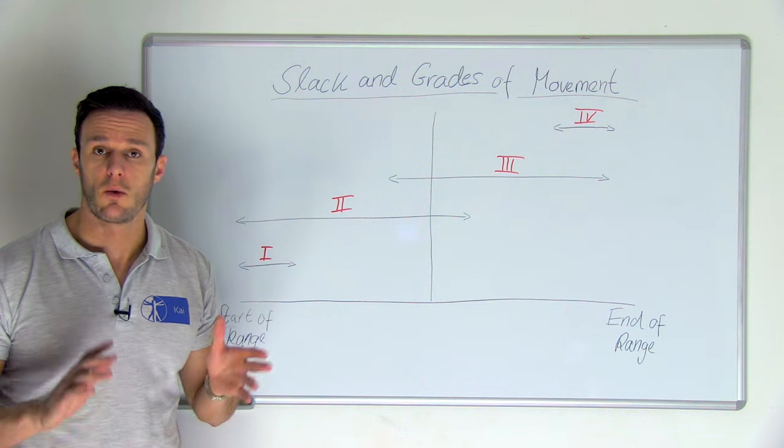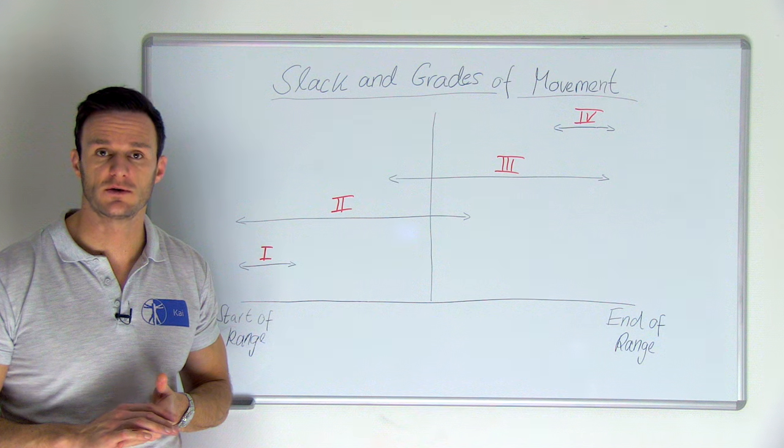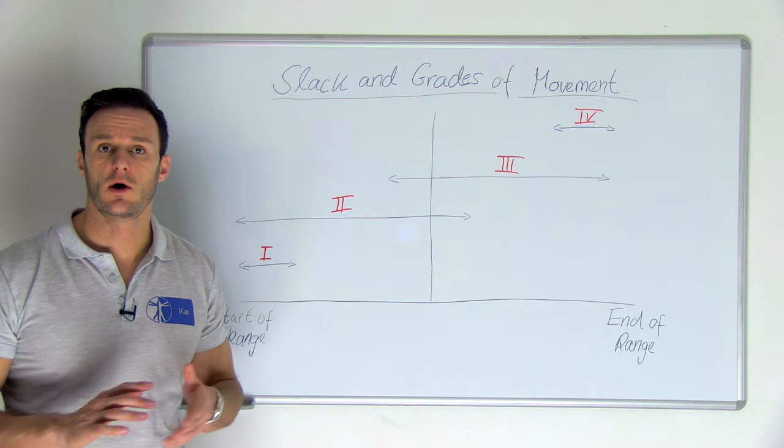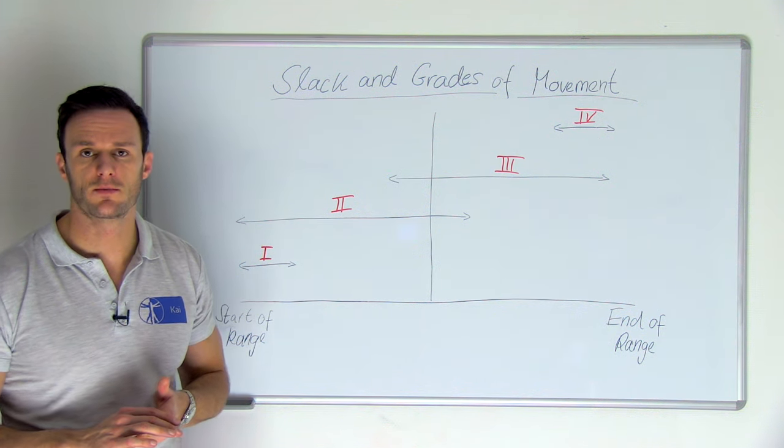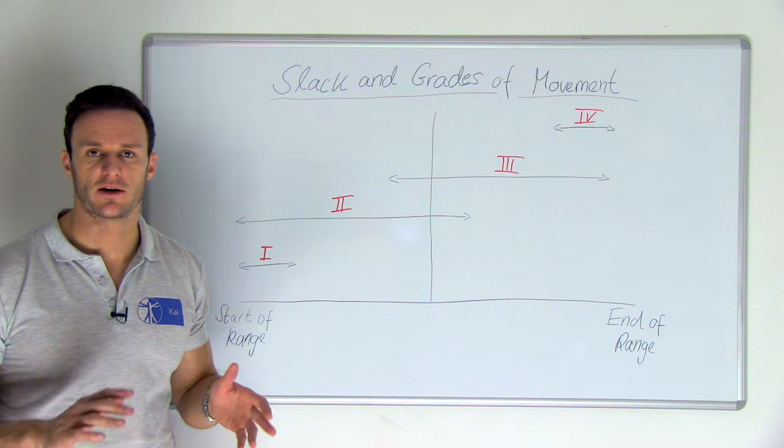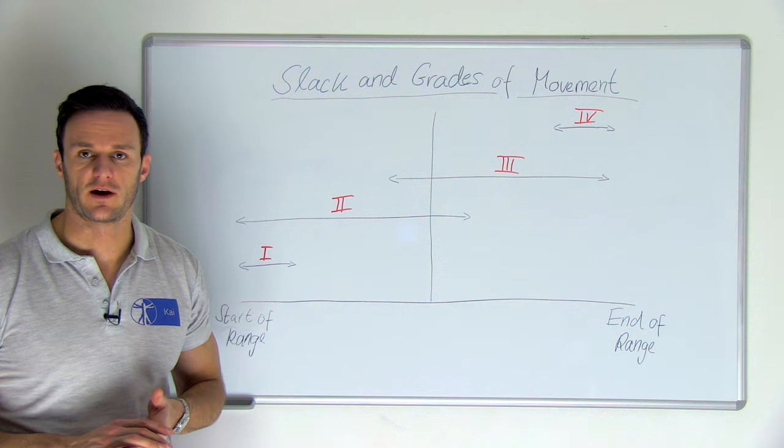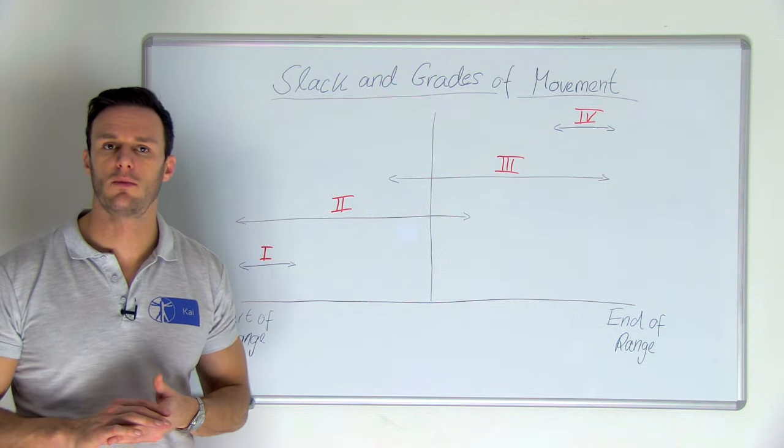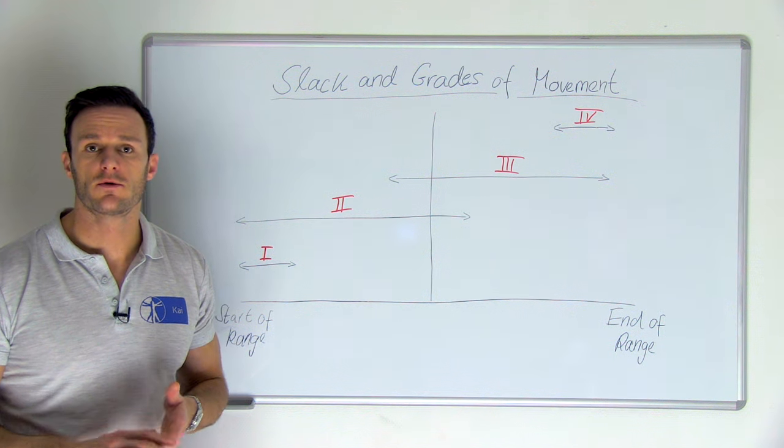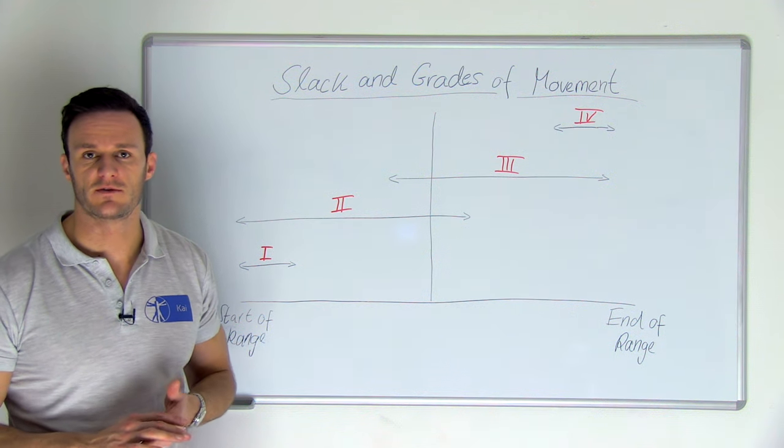Maitland describes grades 1 and 2 as techniques which don't stretch the tissue but with the goal of pain reduction through proprioceptive input of the joint capsule. The goal of Grade 3 and 4, on the other hand, is often to mobilize the joint capsule through end range stretch of the connective tissue.